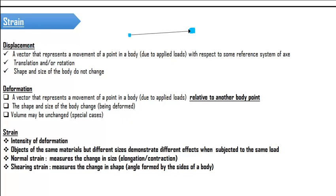In displacement, position is described within a particular coordinate system. Deformation is purely relative — one point deforms relative to another, and there can be a volume change. After understanding displacement and deformation, we can discuss strain, which is nothing but the intensity of deformation — how intensely the deformation has taken place.